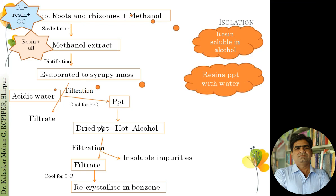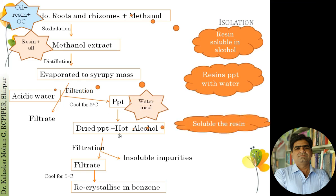The precipitate is collected, dried, and then warmed with alcohol — since resins are soluble in alcohol, the precipitate dissolves in it. The remaining impurities, such as acid fractions dried along with the precipitate, are insoluble in alcohol and remain in solid form, while only the resins dissolve in the hot alcohol.